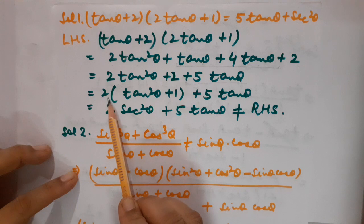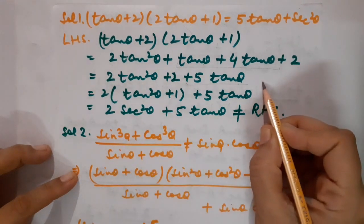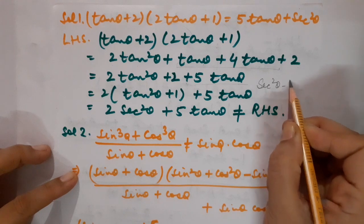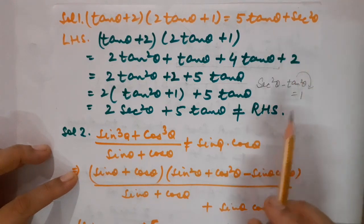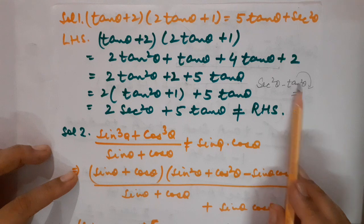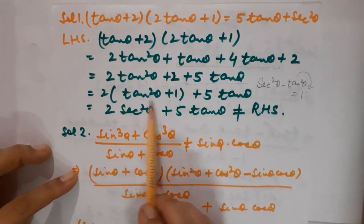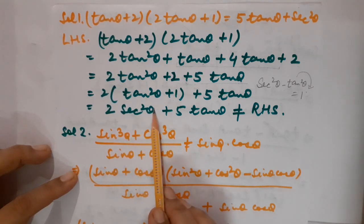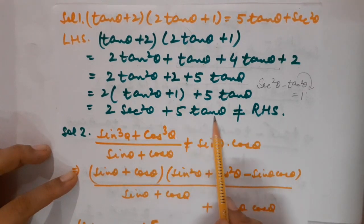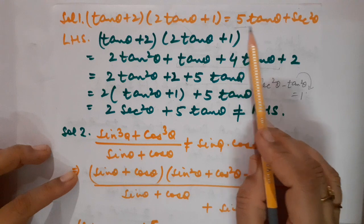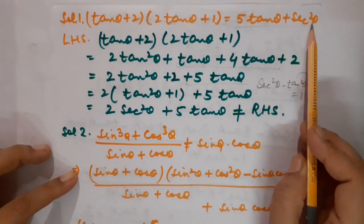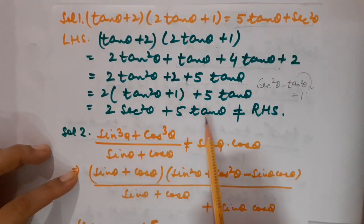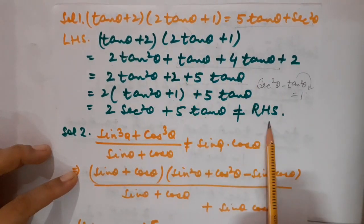From here I have taken 2 as common. There is one trigonometric identity: sec²θ - tan²θ = 1, which gives sec²θ = 1 + tan²θ. So at the place of 1 + tan²θ I have written sec²θ, giving 2sec²θ + 5tan θ. But what I want is 5tan θ + sec²θ — not twice sec²θ. So LHS is not equal to RHS.